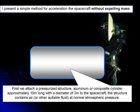First we attach a pressurized structure, an aluminum cylinder approximately 10 meters long with a diameter of 3 meters to the spacecraft. The structure contains air at normal atmospheric pressure.